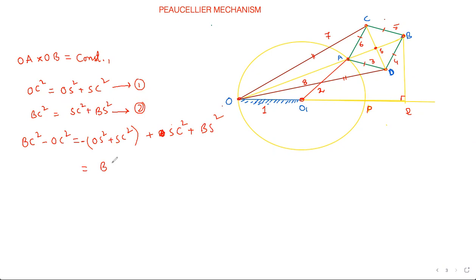BC² is smaller and OC² is greater. So one second guys, no issues. Which is greater? We have to remove smaller from greater, right? So we'll do that. No issues.